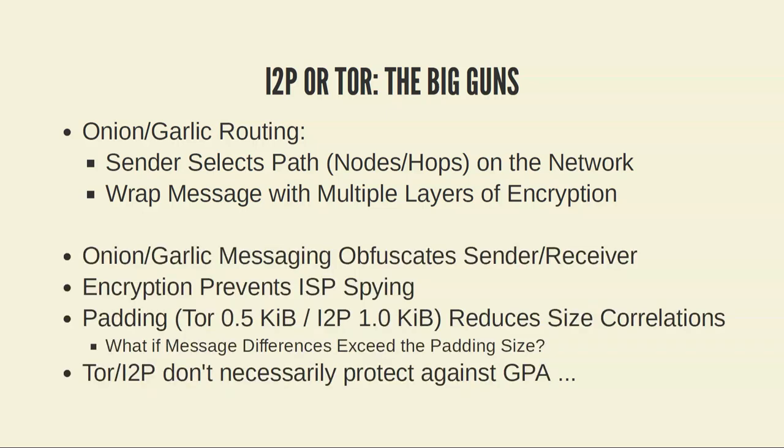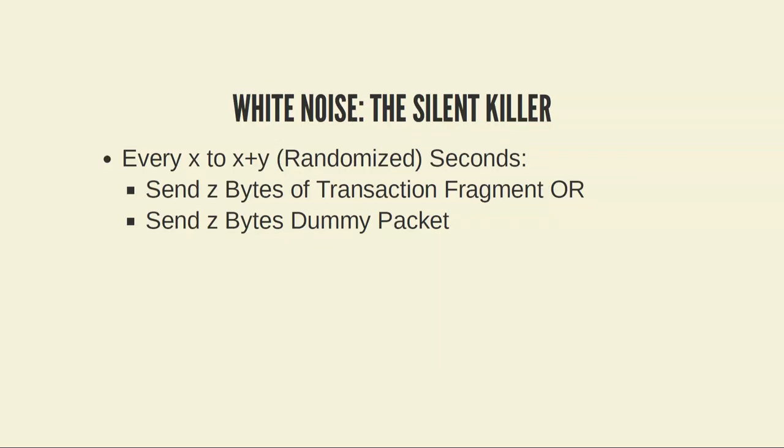I2P and Tor break apart the two endpoints of the communication channel. That's why Monero has always had this in the roadmap — if they use I2P, whoever is receiving the transaction wouldn't even know the IP of the sender. The first type of spy is pretty much completely mitigated because they don't even know the IP of the other person. For more advanced passive adversaries, they may still be able to infer some information.